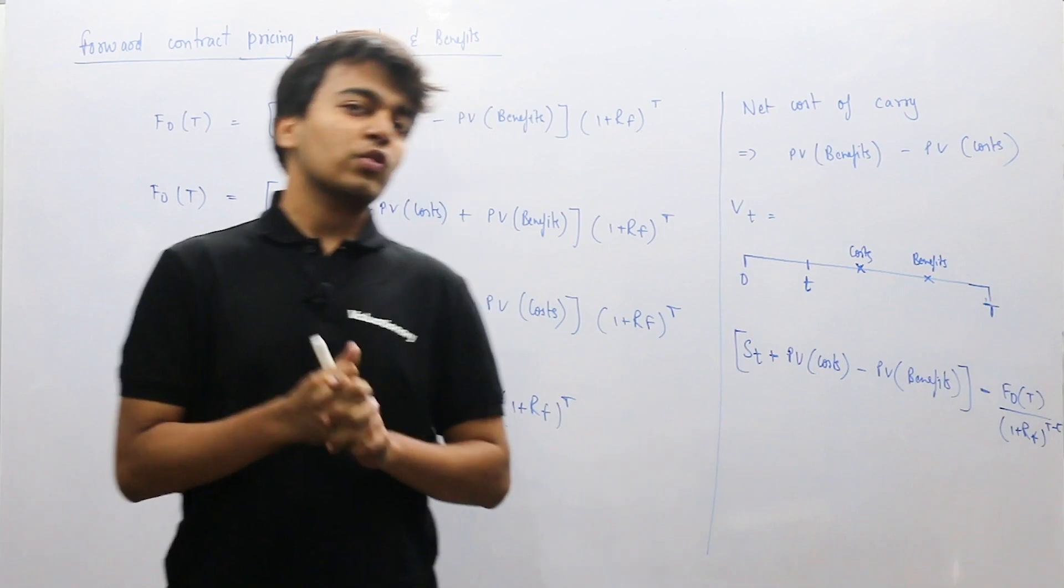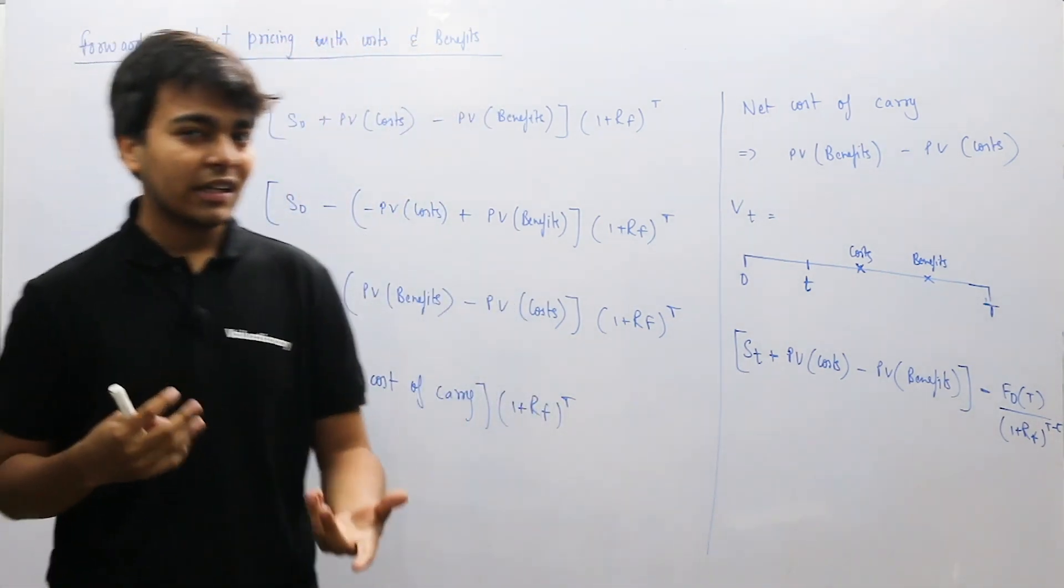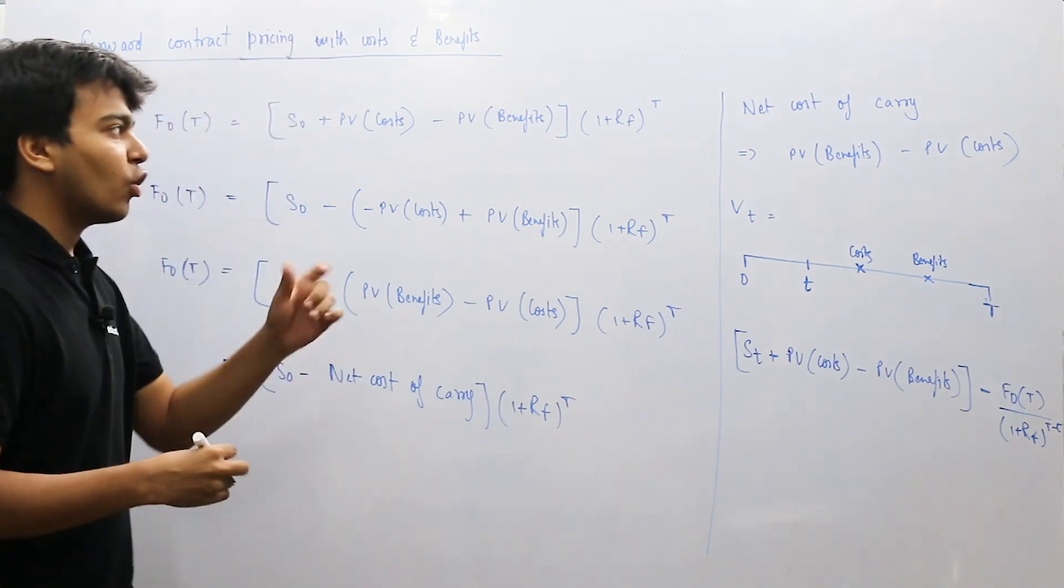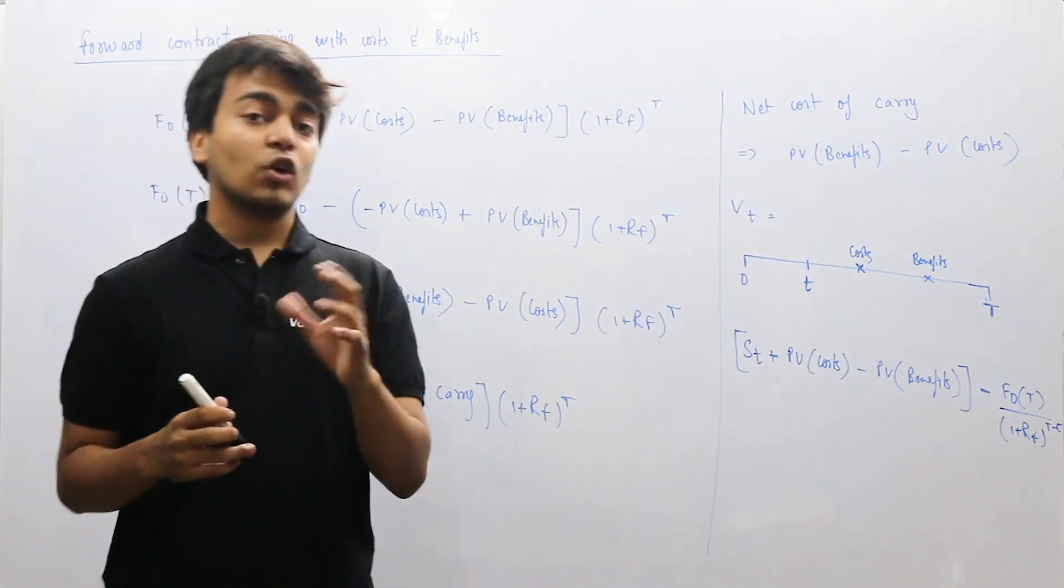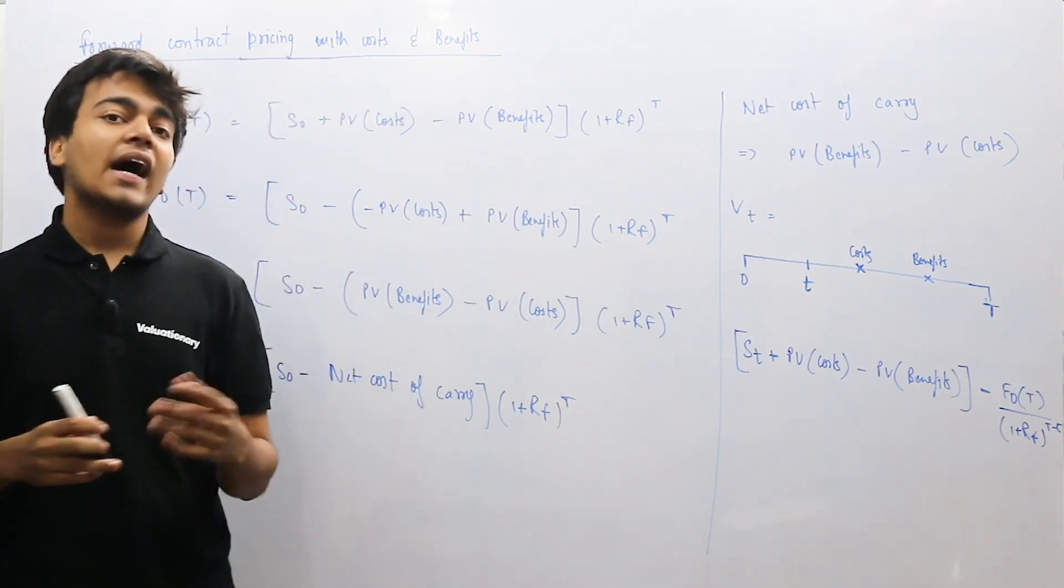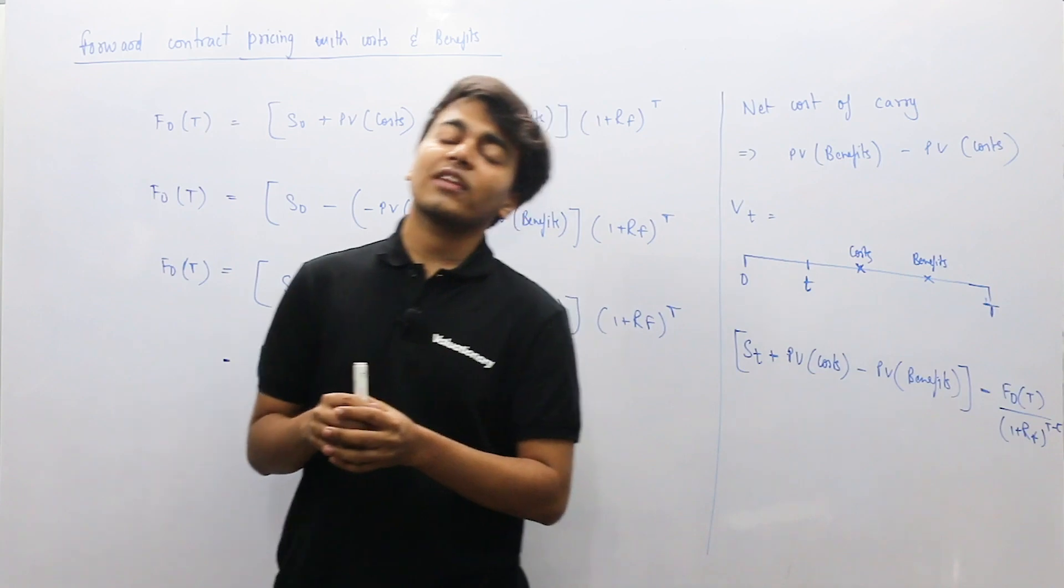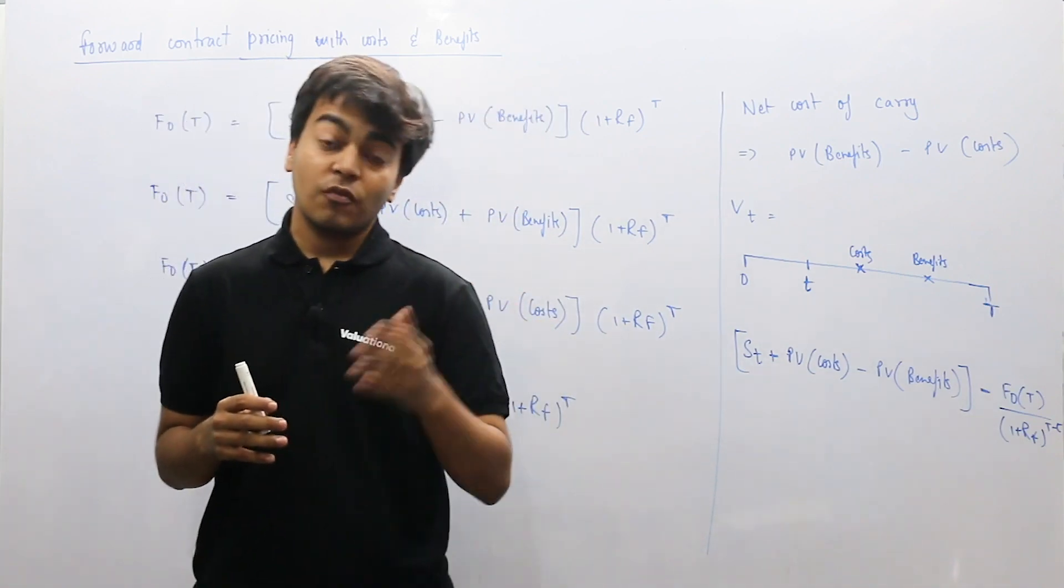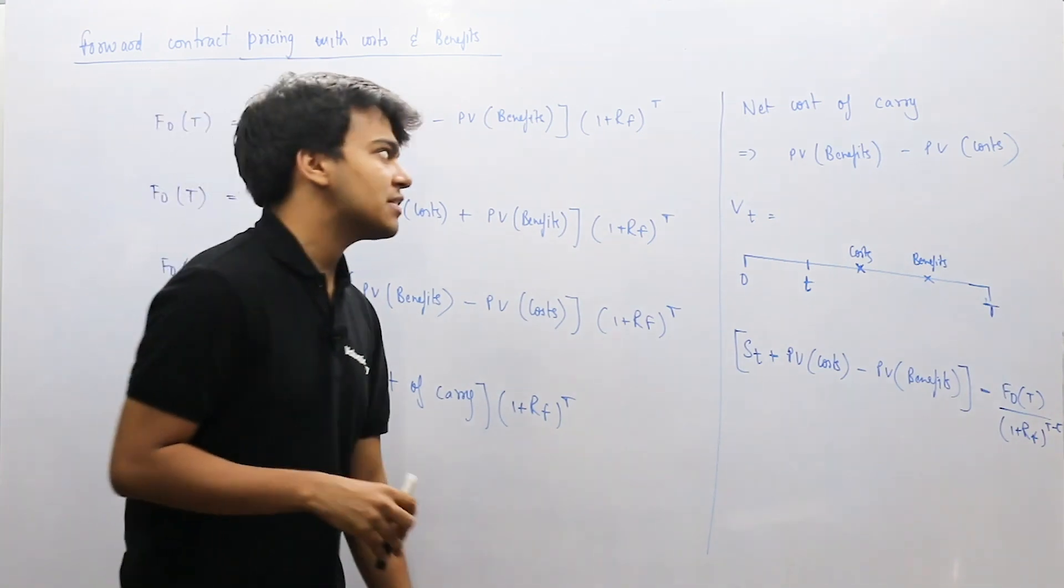Hey there, so we have understood how to calculate the forward price when we have cost and benefit associated with the underlying asset. Now, we will give the concept of the benefits and costs term, that is net cost of carry. And at the very same time, how we will be calculating the value of the forward contract at different time periods when we have cost and benefits involved with the underlying asset is what we are going to see next.